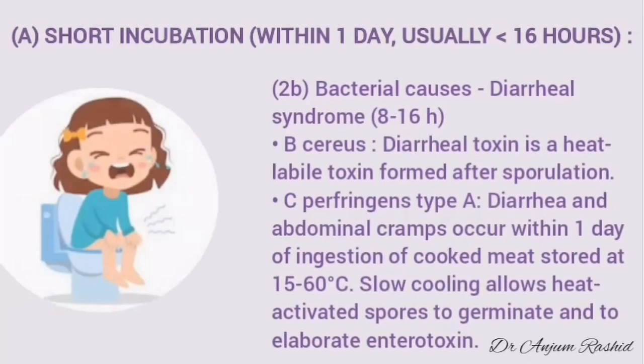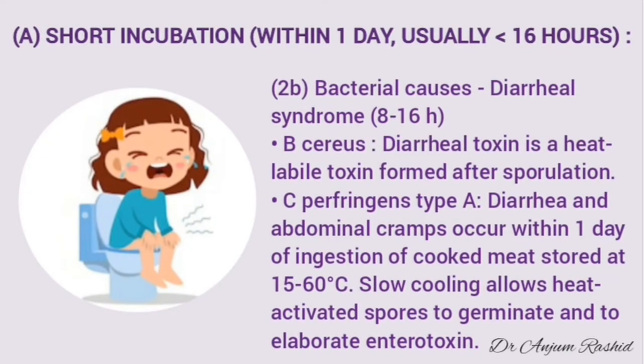The second group of bacterial causes in short incubation period diseases is those bacteria which produce a diarrheal syndrome, with an incubation period of 8 to 16 hours. Again, Bacillus cereus is in this group — this time producing a diarrheal toxin, which is a heat-labile toxin formed after spore germination. The second bacterium is Clostridium perfringens type A, which produces diarrhea and abdominal cramps within one day of ingestion of cooked meat stored at 15 to 60 degrees centigrade. Slow cooling allows heat-activated spores to germinate and elaborate enterotoxins.